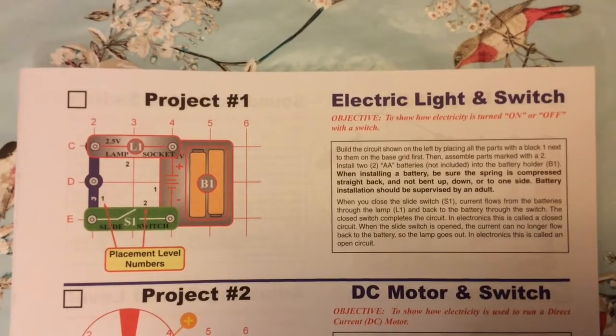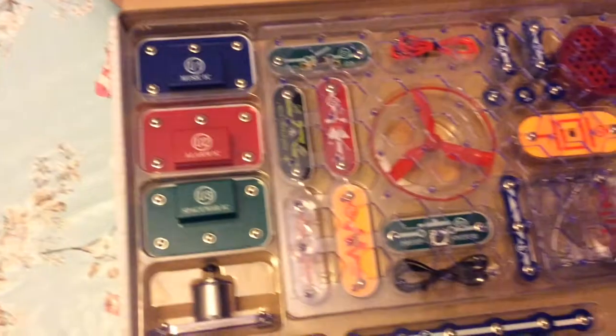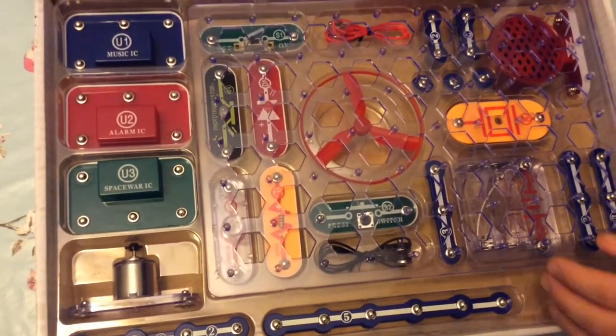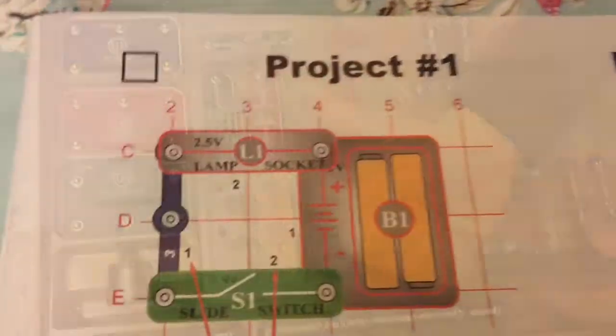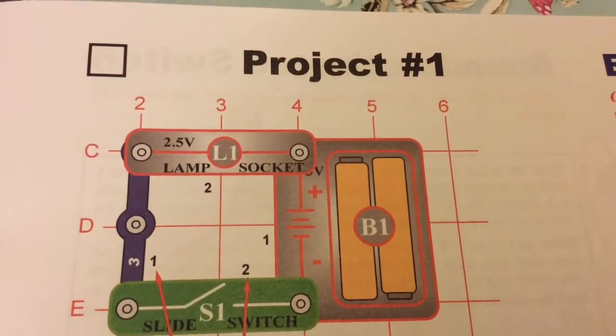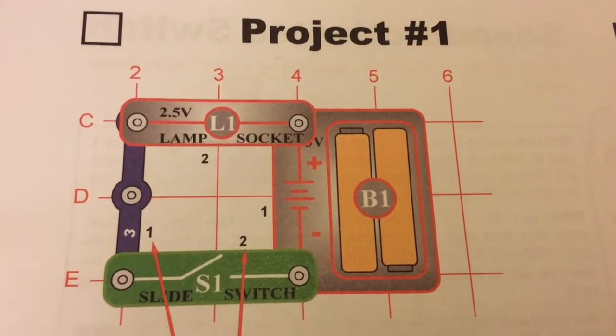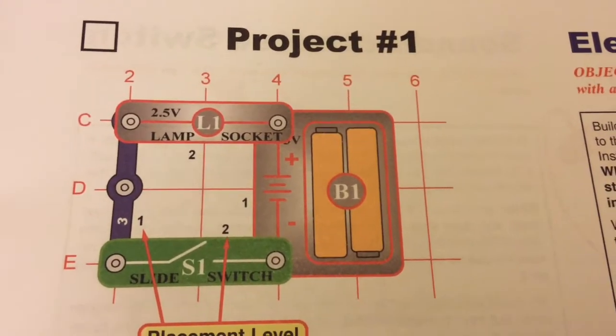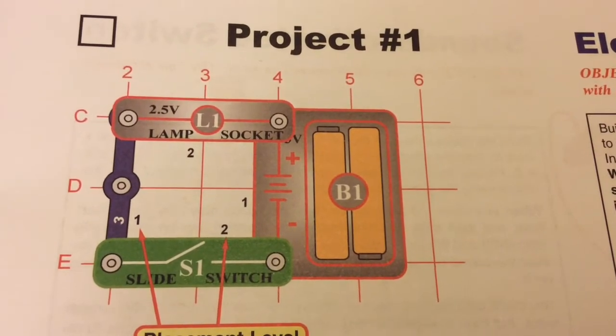So we're going to start at the very beginning with Project 1, electric light and switch, just so we see how it works. Here's the parts, so have a look at the book and get the parts out first. You'll notice that each component has got a number. Now just to note, B1 is the batteries that aren't supplied, so you have to buy your own batteries.